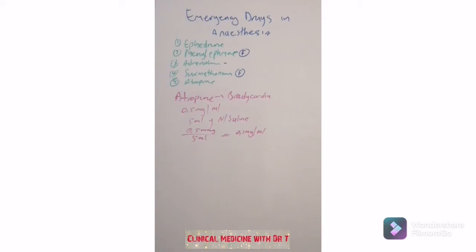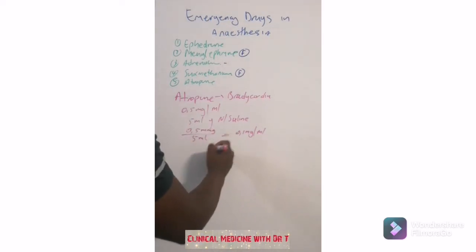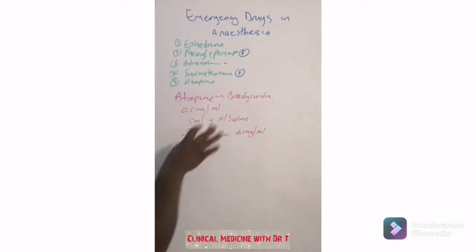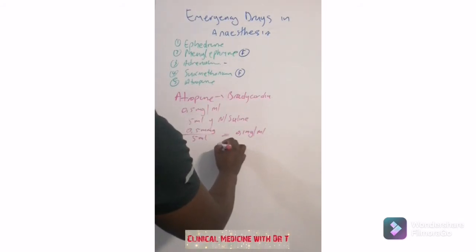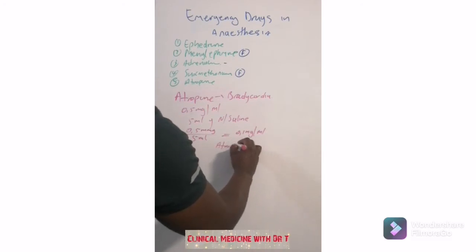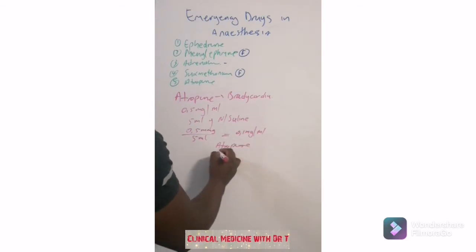For the kids, you dilute it. When you have drawn it into the syringe, you will just write 'atropine', because all the syringes that you use must be labeled.